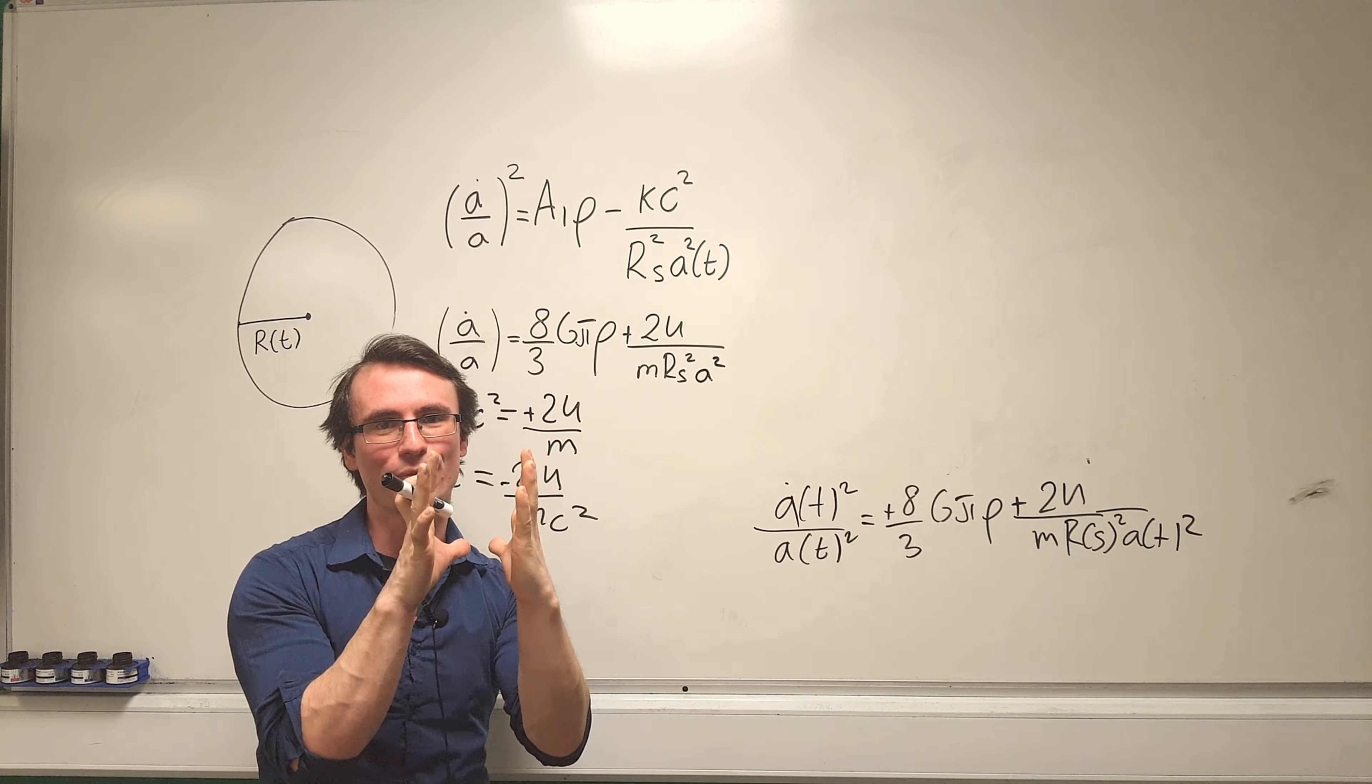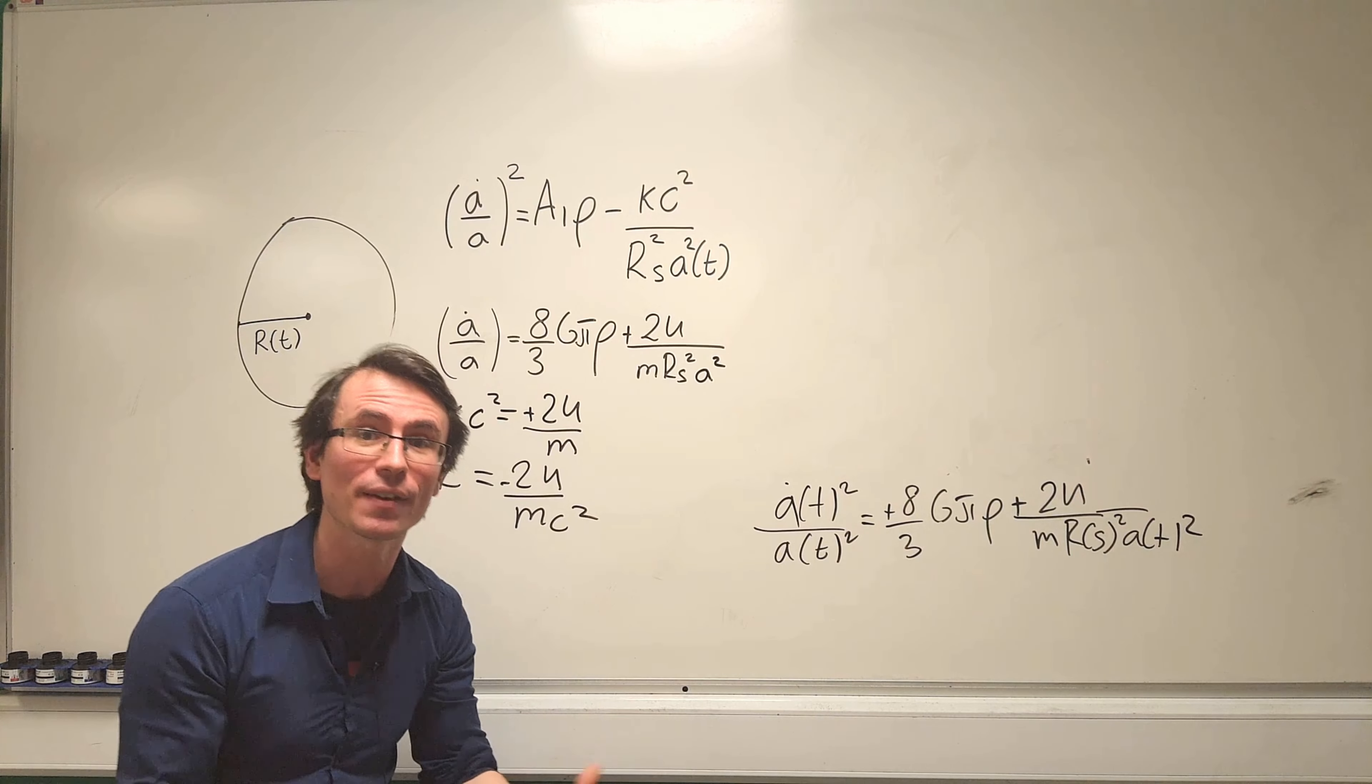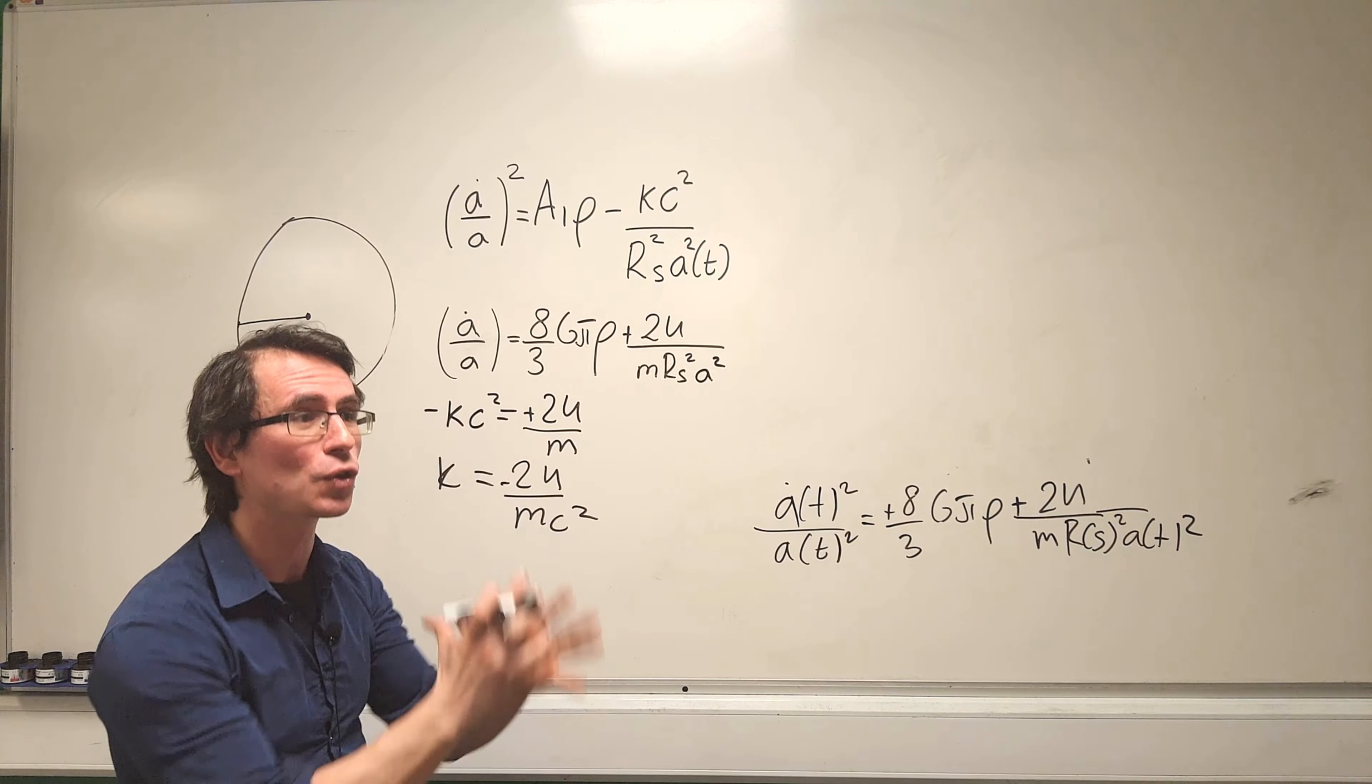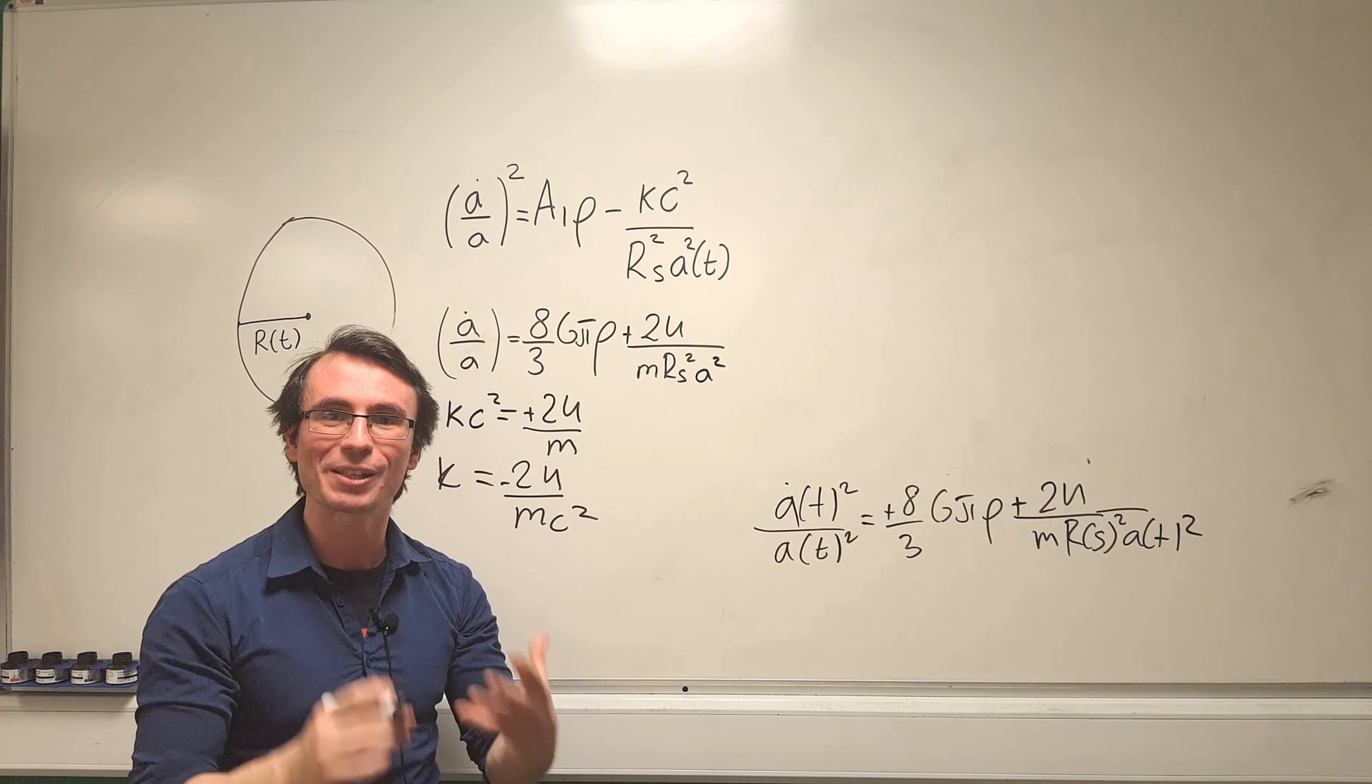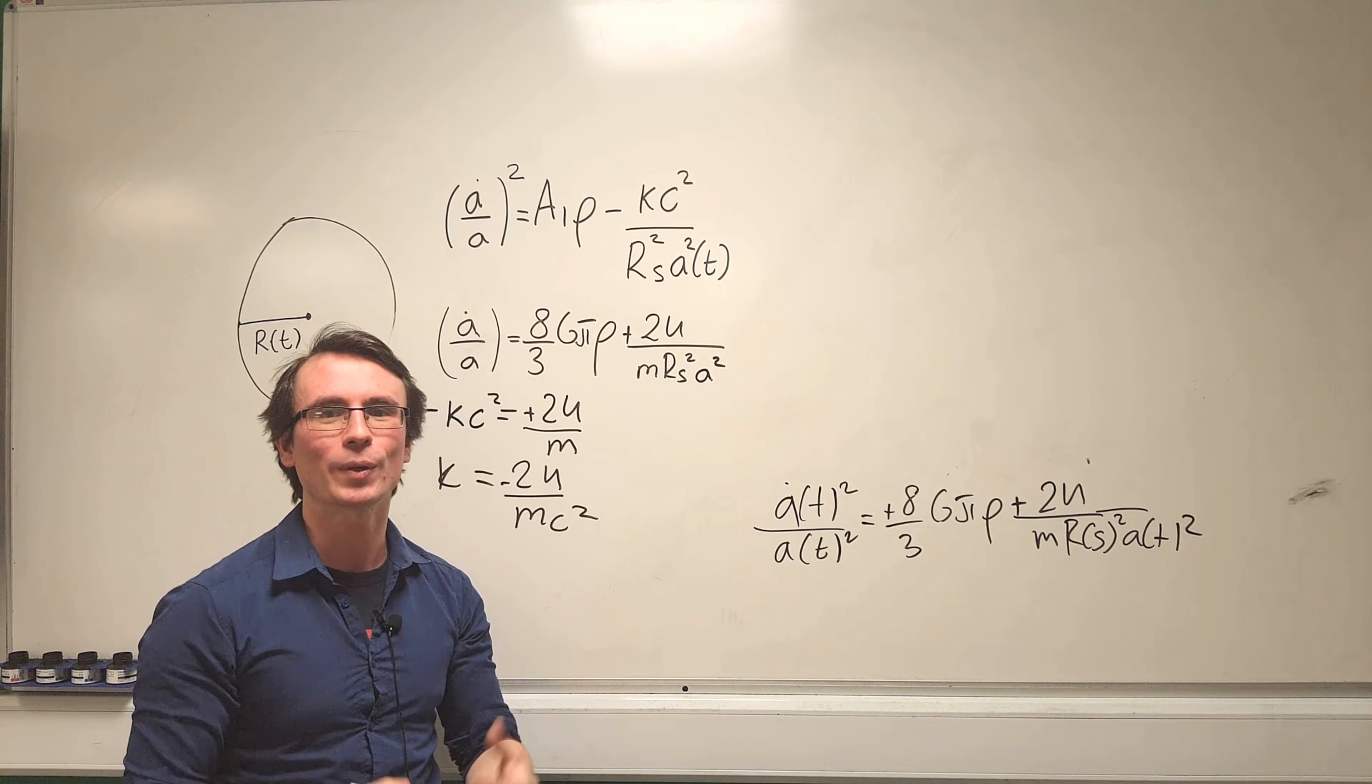Its current expansion then will start retreating and reversing. If k on the other hand is negative, and our data seems to suggest so, this means the universe will keep on expanding forever.